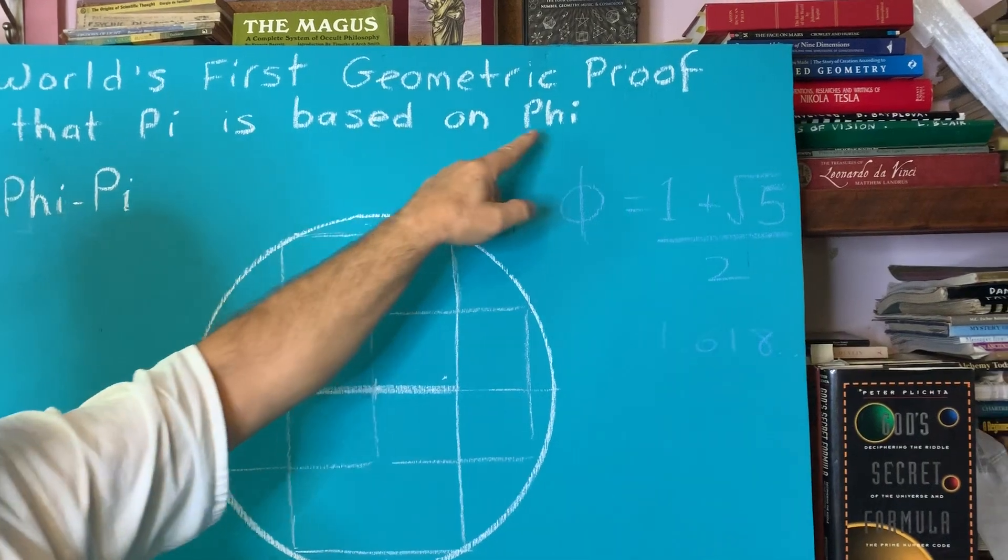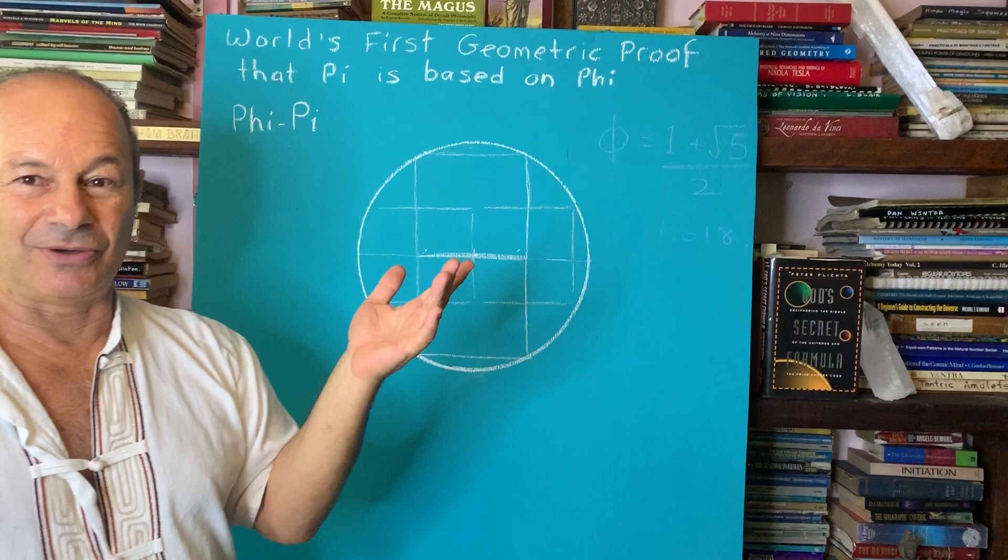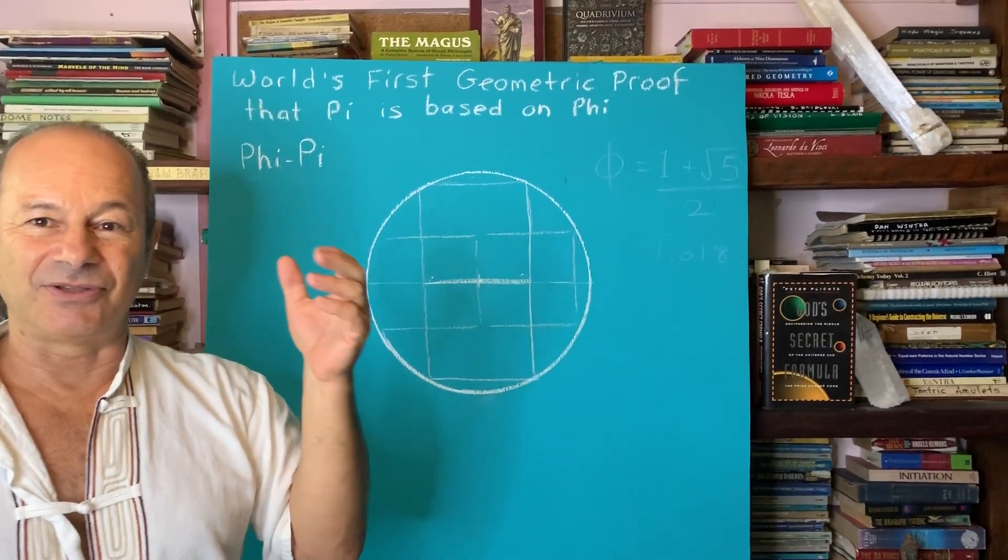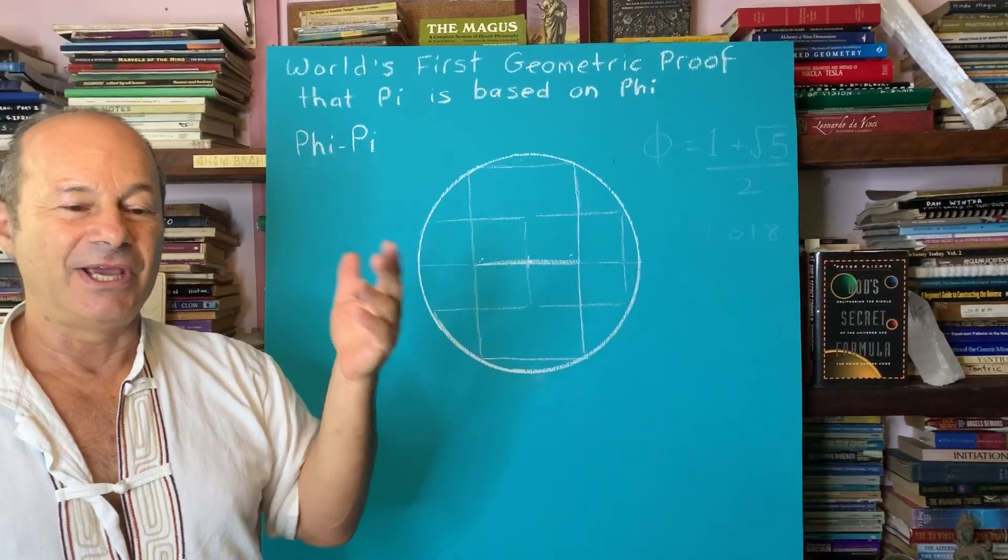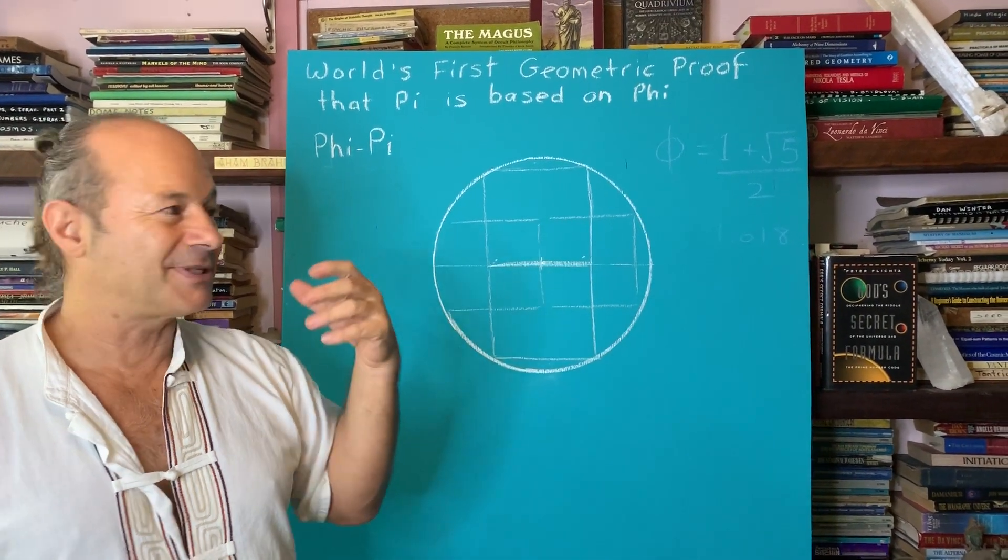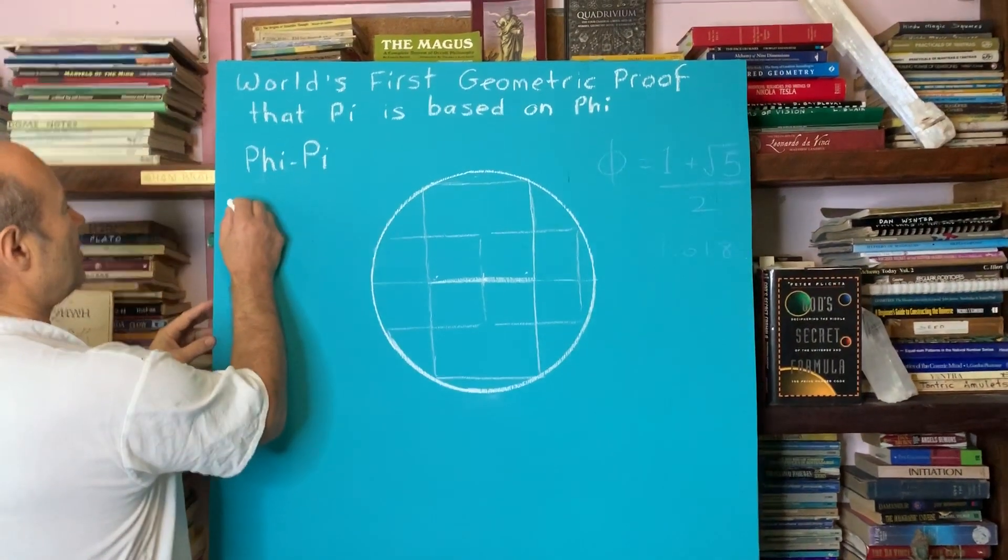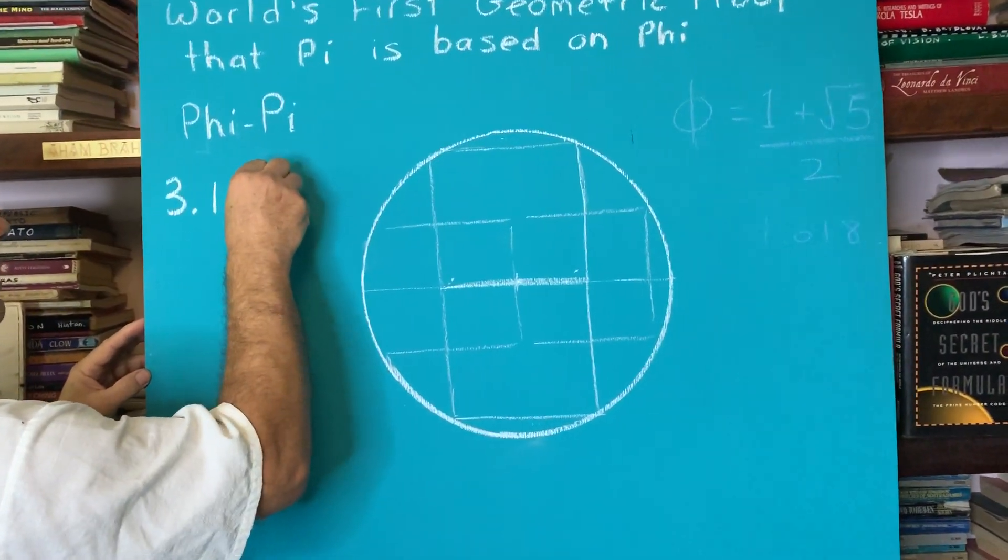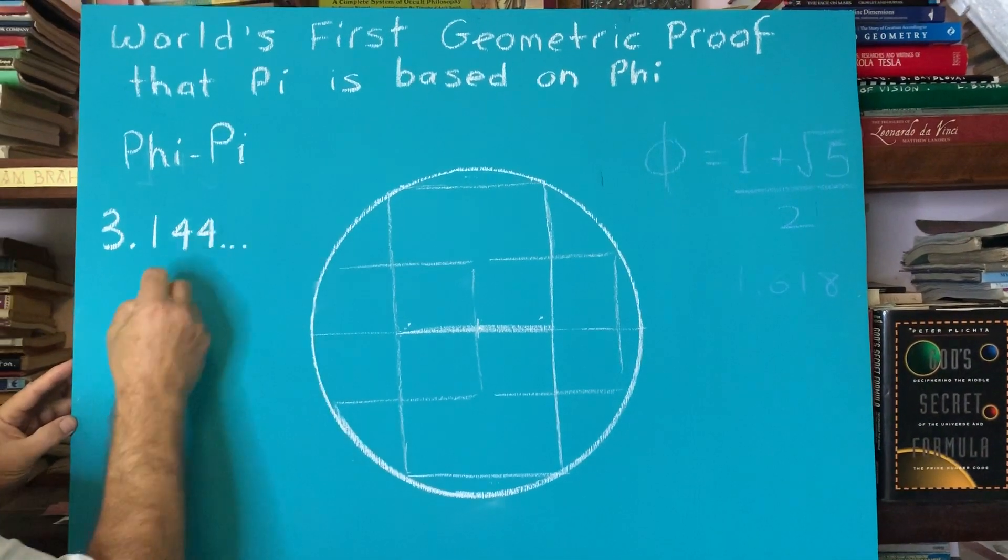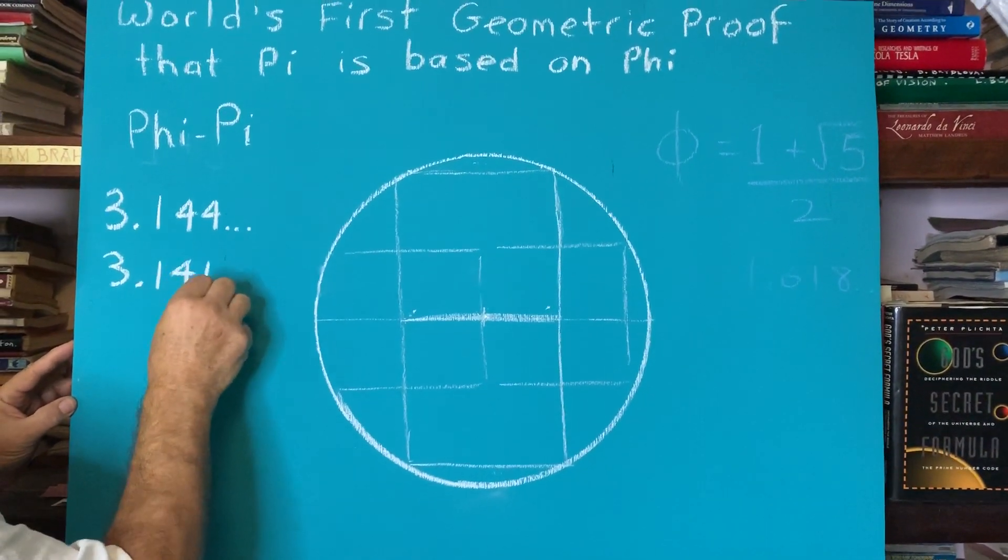is based on Phi, which is 1.618, and that the correctional code, when we adjust traditional Pi, the Pi that is deficient by 0.003, we're going to establish that the true value of Pi is based on 3.144, and this goes on and on, whereas the traditional Pi is based on 3.141.